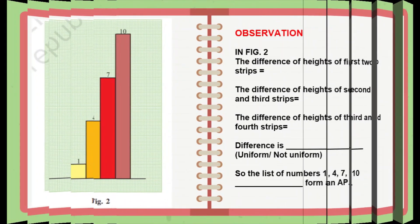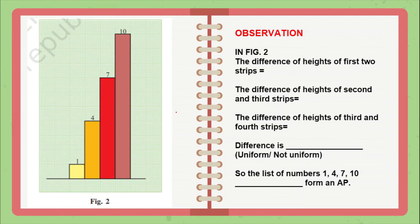From the second figure, the difference of heights of the first two strips is four minus one, which is 3. The difference of heights of the second and third strip is seven minus four, again 3. And the difference of heights of the third and fourth strip is ten minus seven, again 3. So we can clearly observe that this difference is uniform — we are getting the same value 3. So we can conclude that the list of numbers 1, 4, 7, 10 does form an AP.